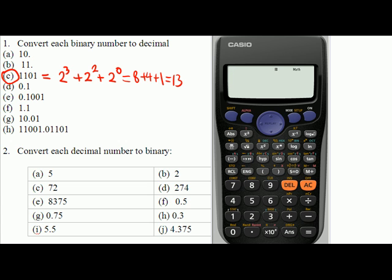First, look at question 1c. I have binary number 1101. This is equivalent to 2³ + 2² + 2⁰, which is 8 + 4 + 1, which equals 13 as a decimal number.